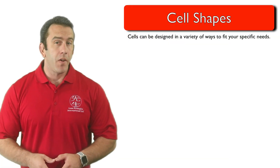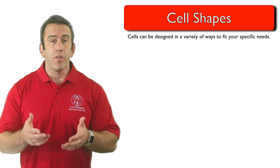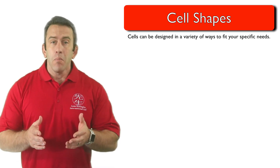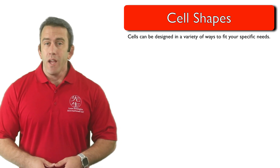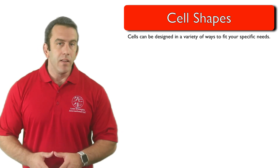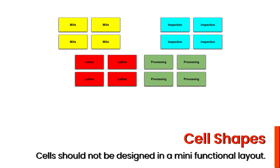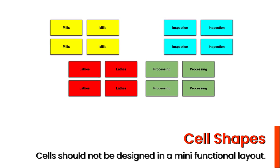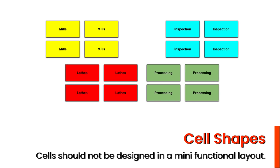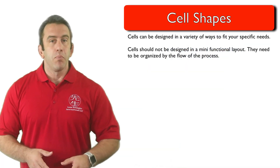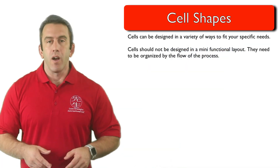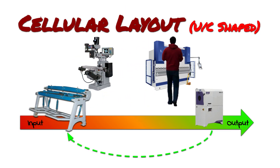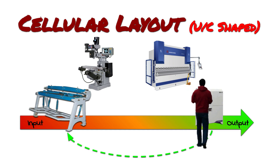A work cell is commonly thought of as a U-shaped or C-shaped cell. Truthfully speaking though, they can be designed in a variety of ways to fit your specific needs. One important thing to remember is that the cells should not be designed in a mini functional layout. They need to be organized by the flow of your process. This will ensure that the cell is process-based and not operational-based.